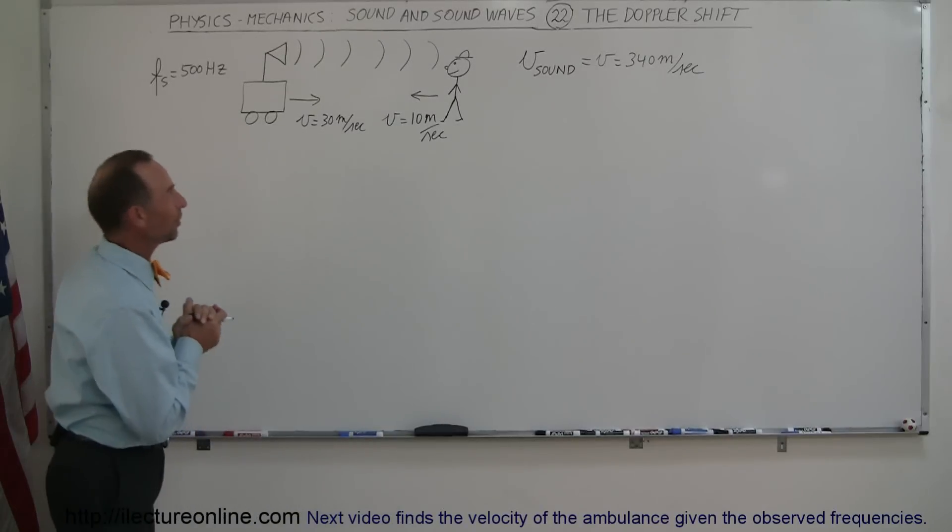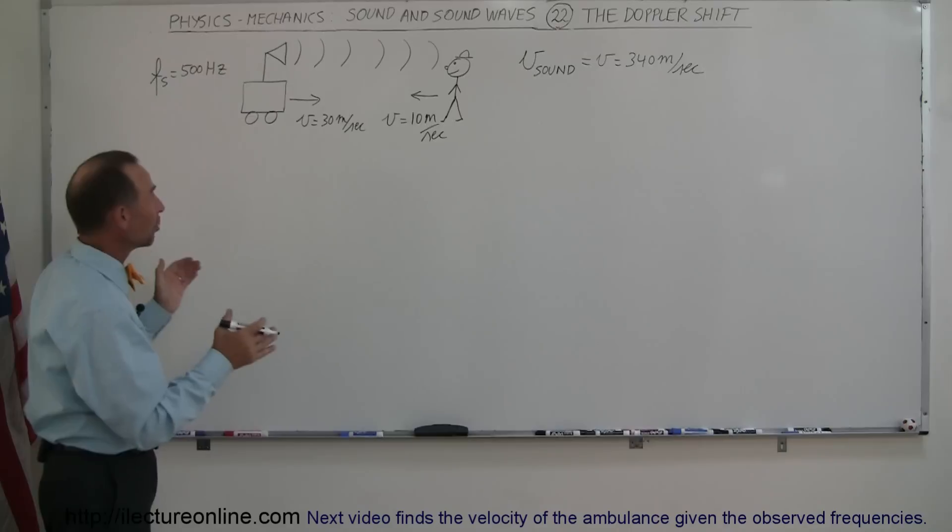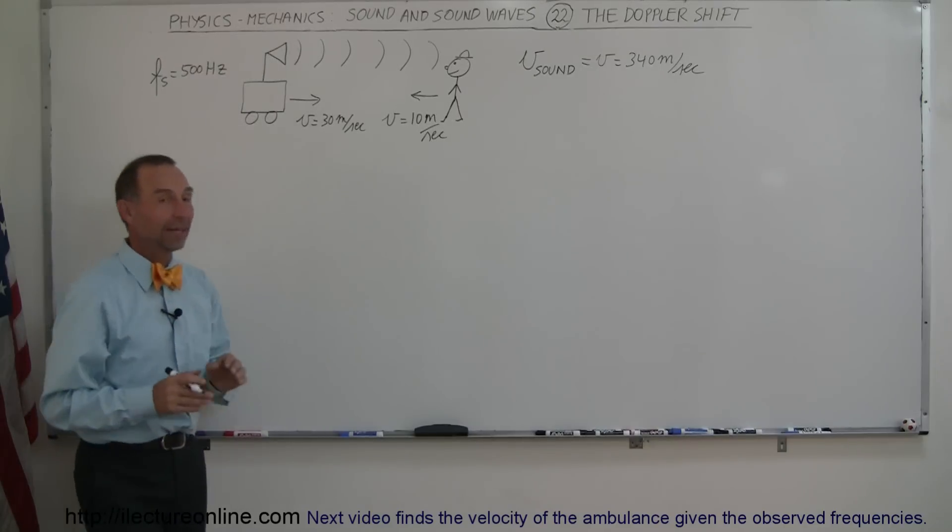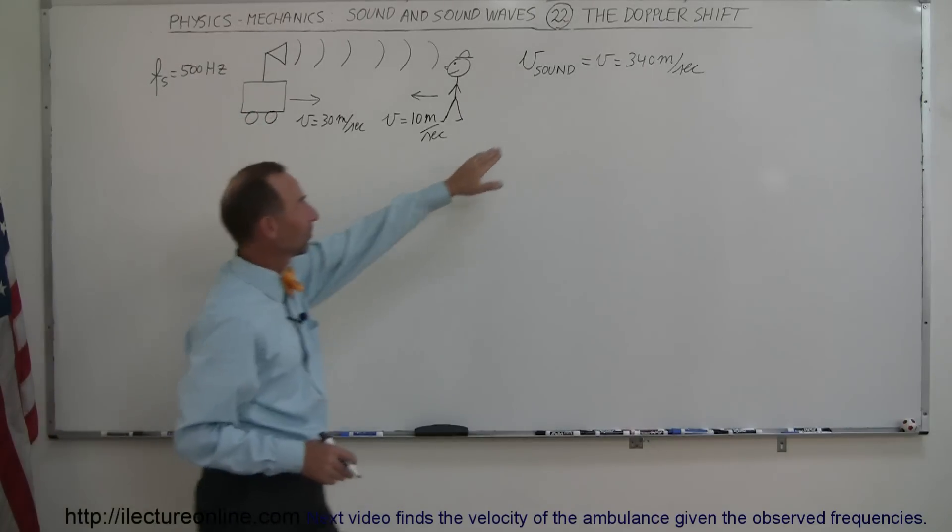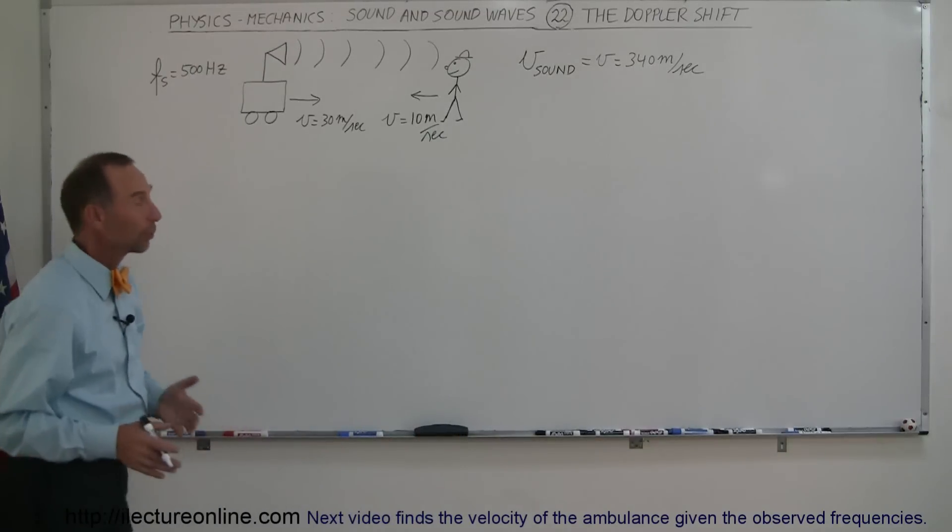And now for the finale of these type of examples, we're going to show you where both object and source are moving and they're moving towards each other. If the source is putting on a sound at 500 Hertz and the velocity of sound in air is 340 meters per second, what will the observer hear?